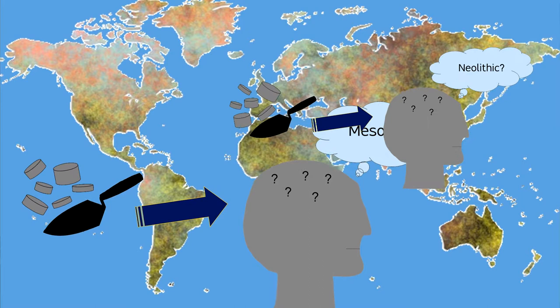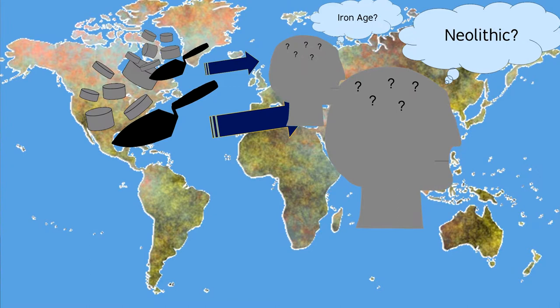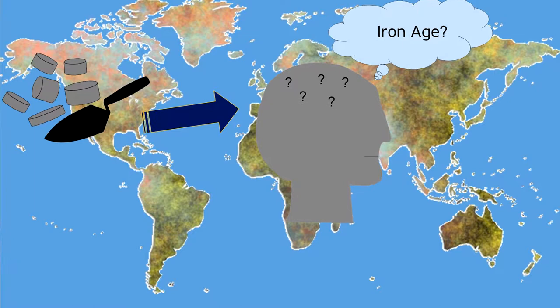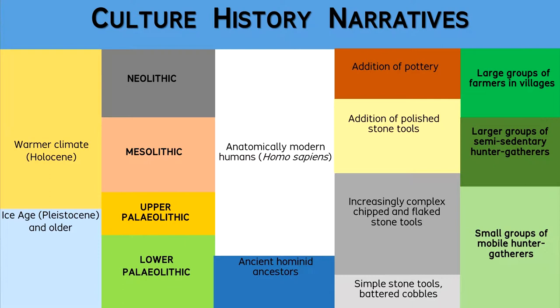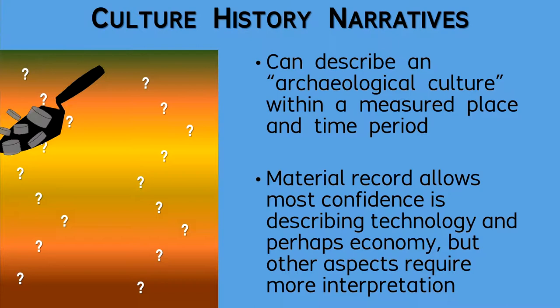In a global view of world archaeology, you can notice some of the generalities of how cultural groups have changed through time. These generalities sometimes are portrayed as grand narratives of cultural history, but realistically they should be understood as schematic frames of reference for navigating through the diverse archaeological sequences of the world. In each region, you can study a unique cultural history, and you should be able to compare with the larger, generalized schematic of world archaeology.